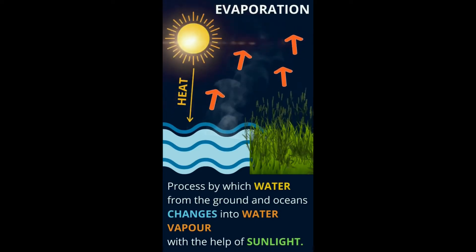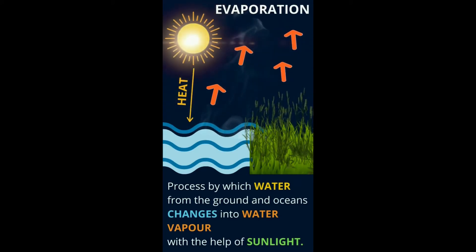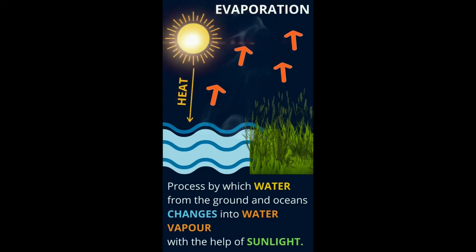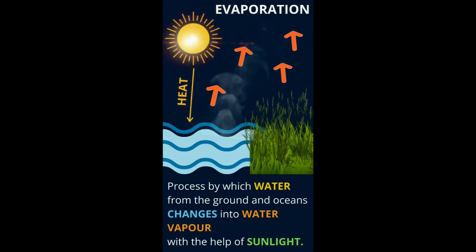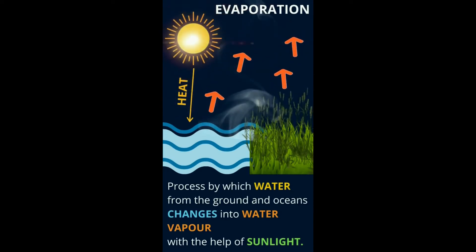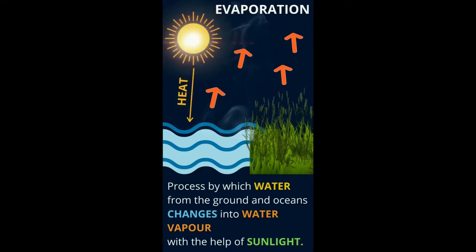Evaporation. What is evaporation? It is the process by which water from the ground or from the oceans changes into water vapor. There is water underground and there is water in the oceans. So evaporation is when this liquid water changes into gaseous state, or it changes into water vapor.